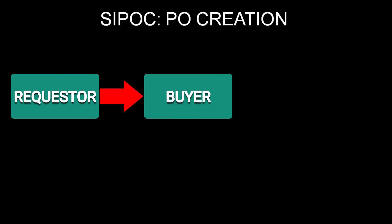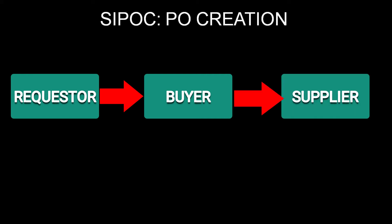This case is taken from a procurement process assessment. In most organizations, when there is a demand to buy a material or a service, you have to work through the purchasing department. The person who raises the demand is called a requester or requisitioner, the one who creates the purchase order is a buyer, and the order is sent to a supplier in the form of a purchase order.